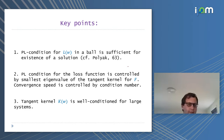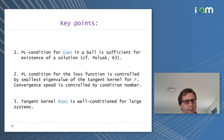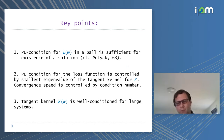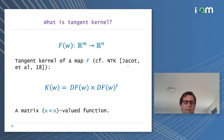First: the PL condition for L(W) in a ball is sufficient for existence. Second: the PL condition for the loss function is controlled by the smallest eigenvalue of the tangent kernel for the function F. Third: convergence speed is controlled by a non-local condition number. Fourth: the tangent kernel K(W) is well-conditioned for large systems — and this is where over-parameterization really helps.